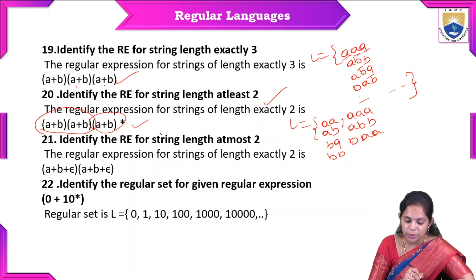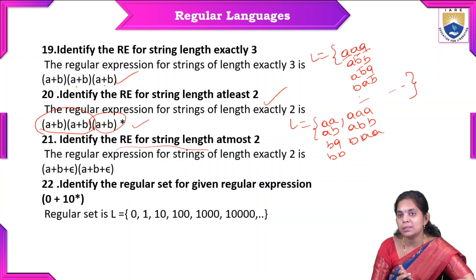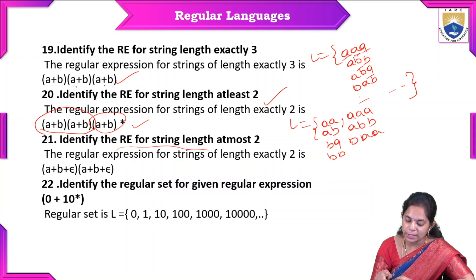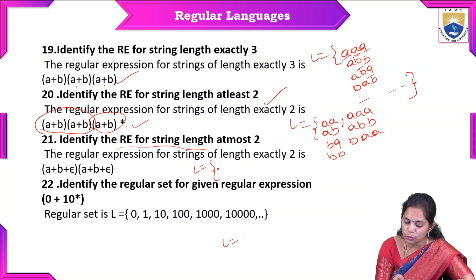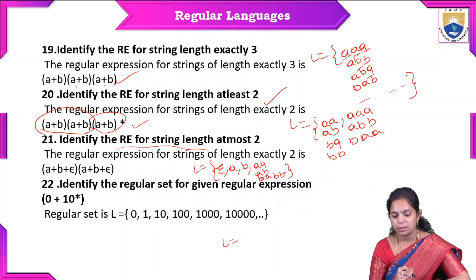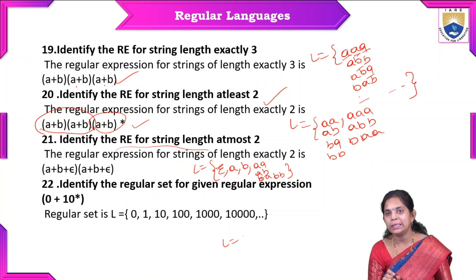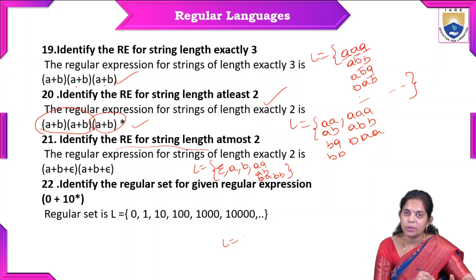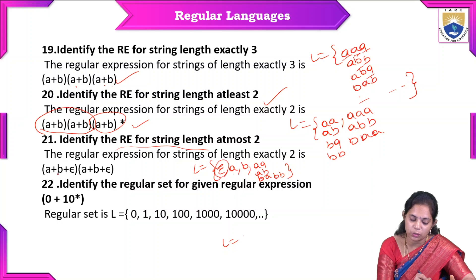Example: string length at most 2. Here minimum is 0 and maximum is 2. So epsilon is accepted, single characters a and b are accepted, and two-character strings aa, ab, ba, bb are also accepted. We write this as epsilon + (a+b) + (a+b)(a+b).